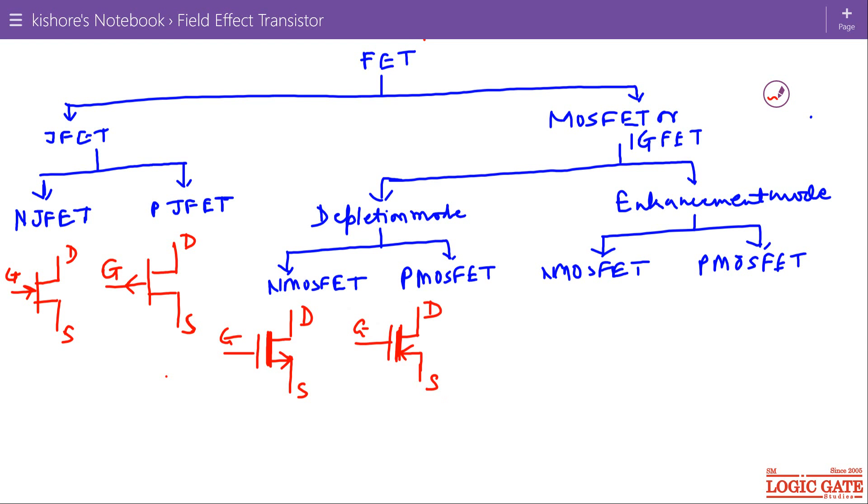Now in case of enhancement N MOSFET, the symbol of enhancement N MOSFET is similar to depletion mode N MOSFET. This is the symbol for N MOSFET. This line is thinner. Or there is one more symbol. This is the symbol. This one is gate, drain, source. This is the arrow. These two symbols are for enhancement N MOSFET and for P MOSFET, the direction of arrow is reversed.